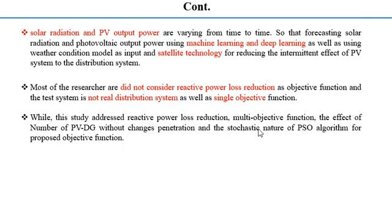As you know, solar radiation and PV output power vary over time. Forecasting the radiation and photovoltaic output power using machine learning and deep learning, with weather conditions as input and satellite technology, helps reduce the intermittent effect of PV.